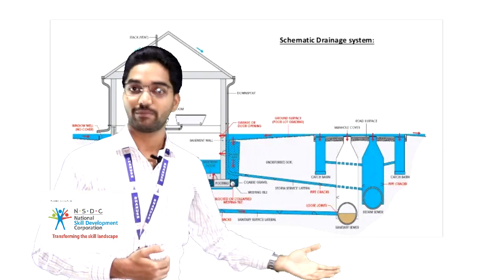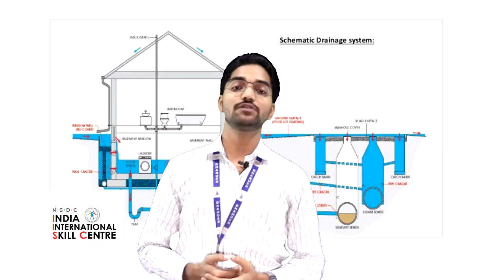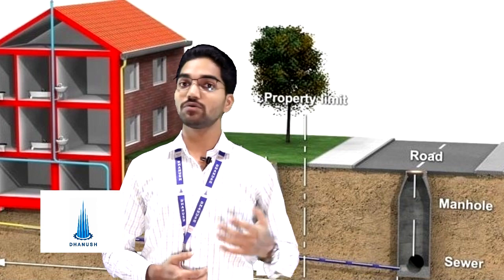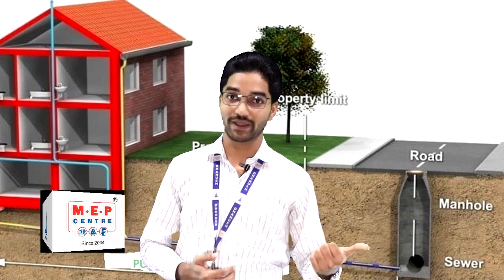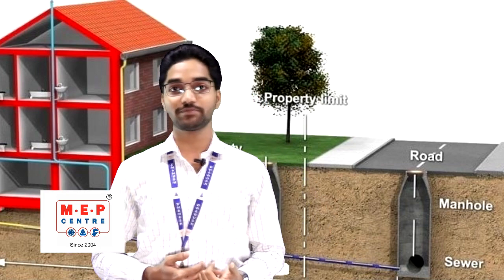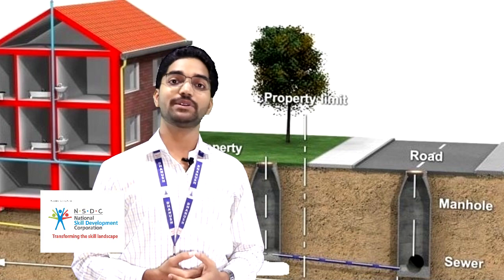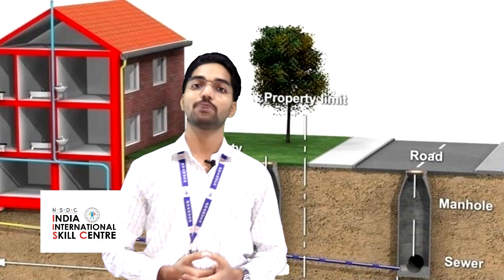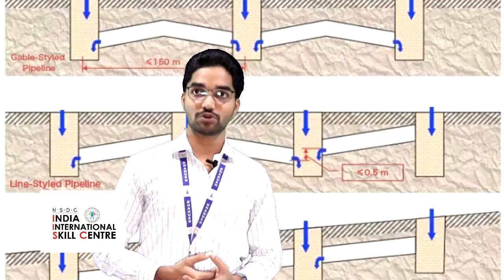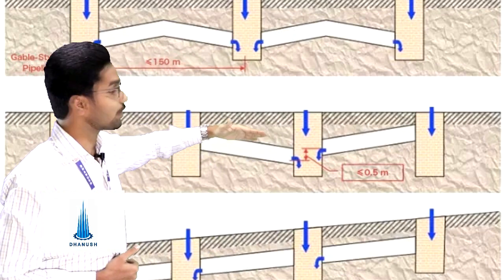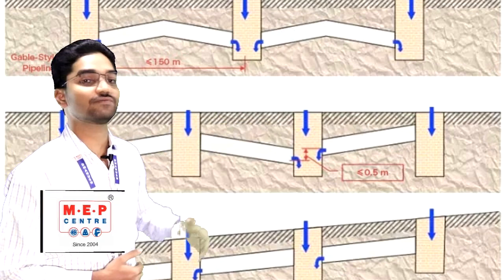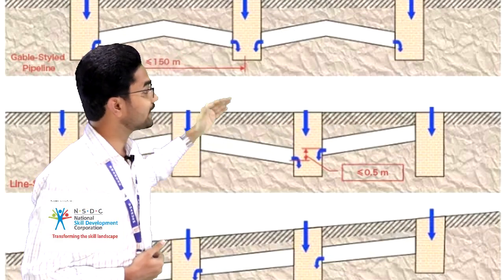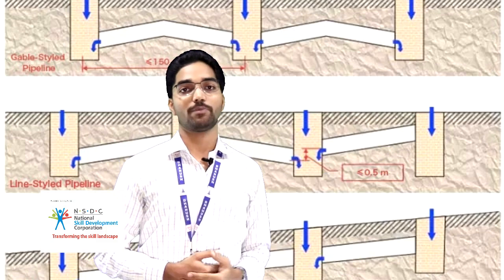All sewage flows from plumbing fixtures through internal pipes to external pipes and then to manholes. We need to know the types of manholes available and which is suitable for our building. We also learn how to select pipes, calculate manhole depth, and calculate slopes. Slope calculation is critical — if proper slope is not maintained, sewage will get stuck in the pipe causing jamming issues. A positive slope ensures sewage flows properly and prevents blockages.